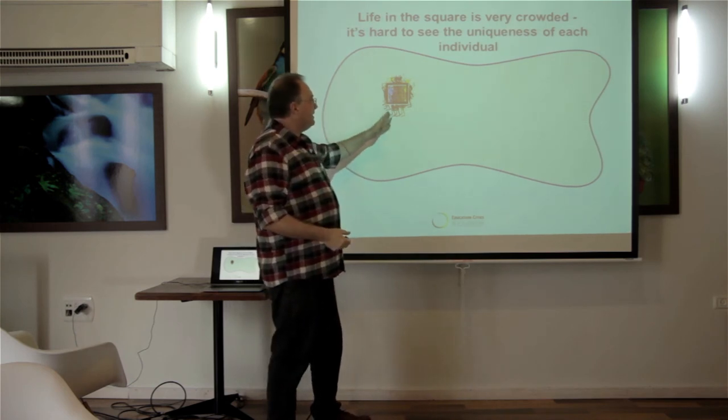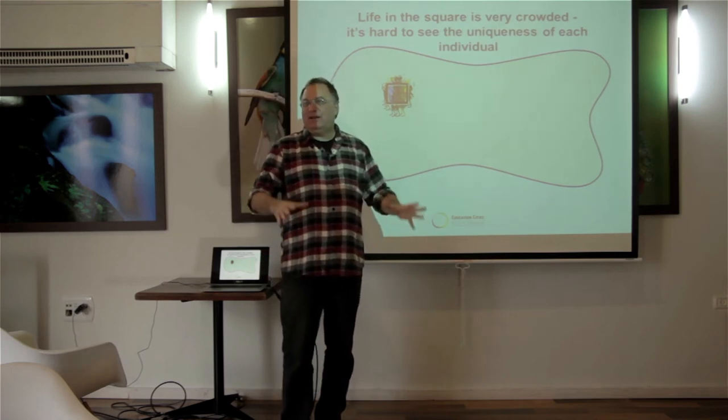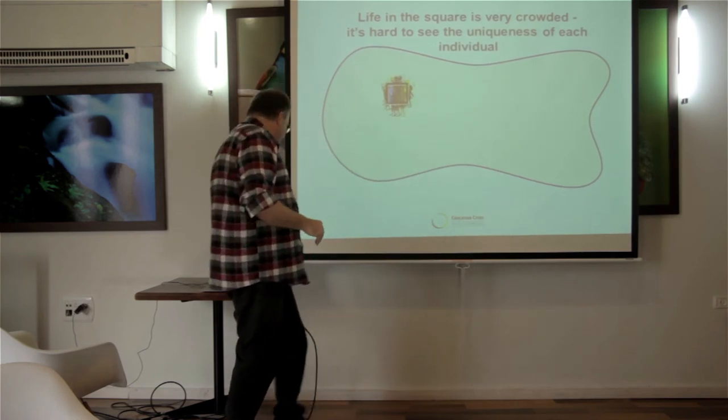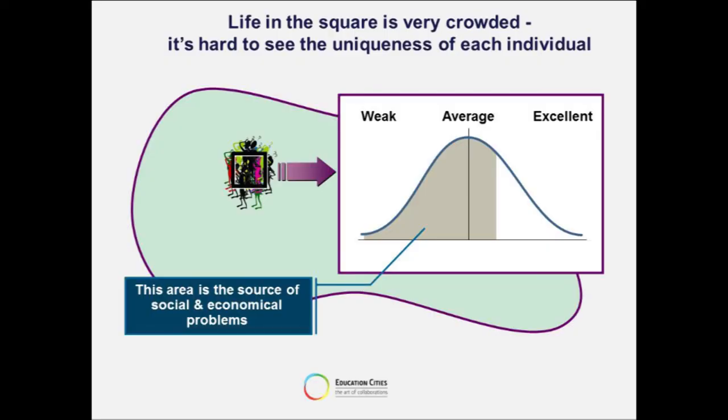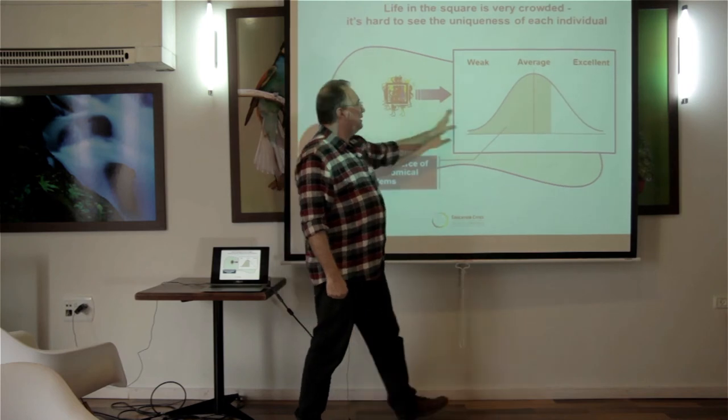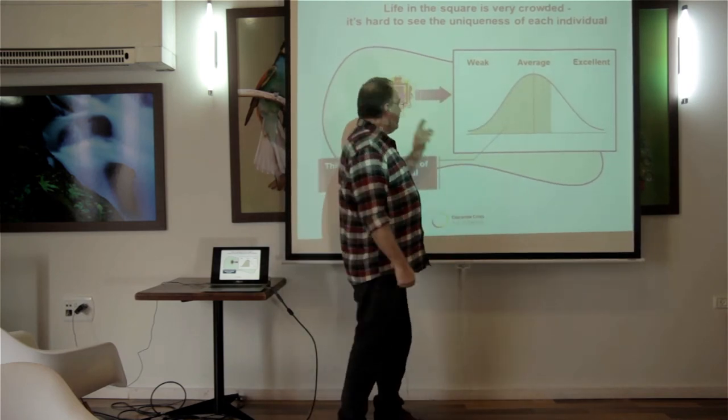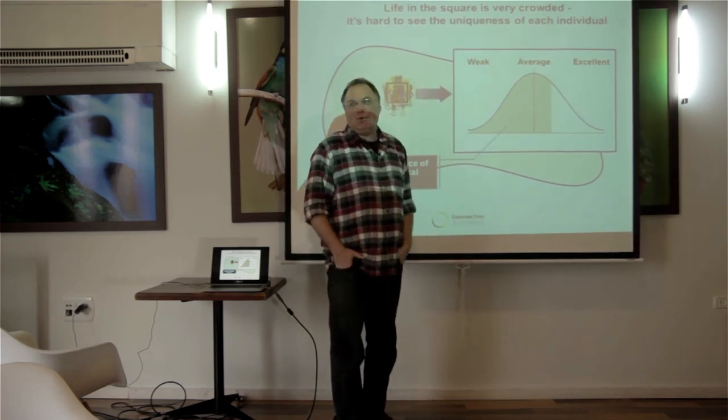But that's the beginning. Now, the square makes a competition between all these people. And this competition makes this bell graph. You say, okay, most of you are mediocre. Some of you are excellent. And some of you are very weak people.